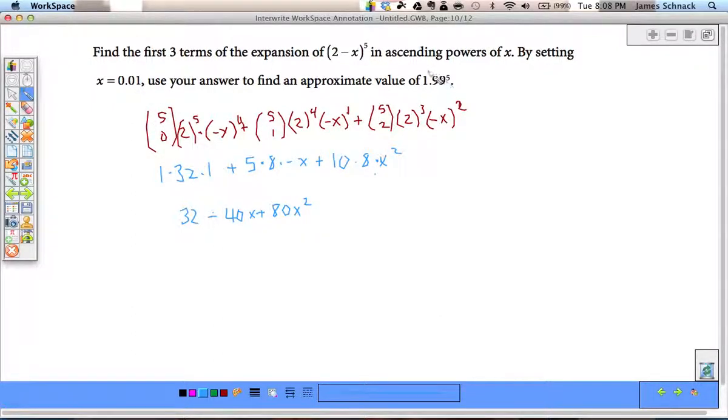Remember, 2 minus 0.01 is 1.99. And these three terms are part of the expansion for this binomial. So, we have 32 minus 40 times 0.01 plus 80 times 0.01 squared.